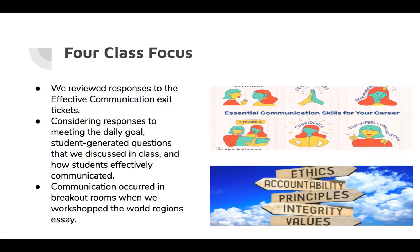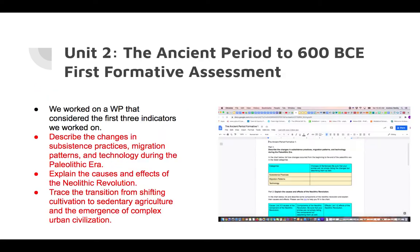Particularly around the activity where we workshopped on the essay, communication occurred in breakout rooms for the most part. We continued our exploration of Unit 2, the ancient period to 600 BCE. We worked on our first formative assessment — a writing prompt covering the first three indicators: describing changes in subsistence practices, migration patterns, and technology during the Paleolithic era.